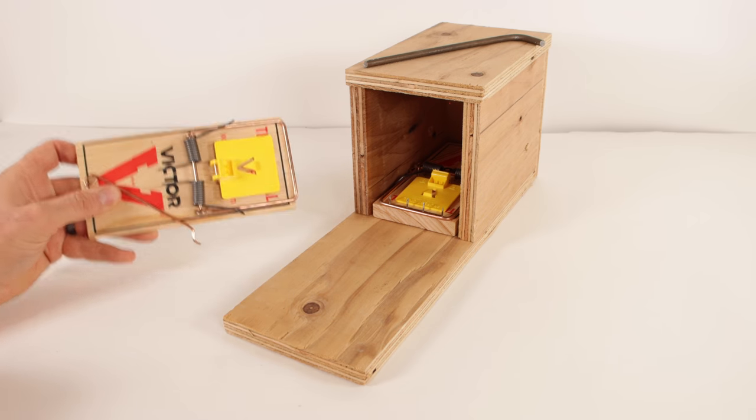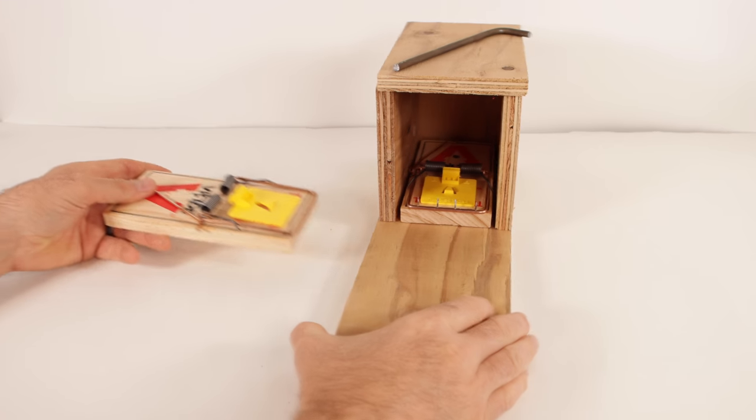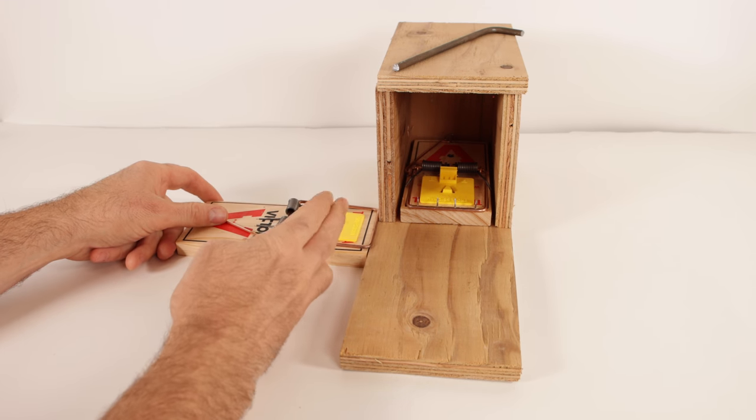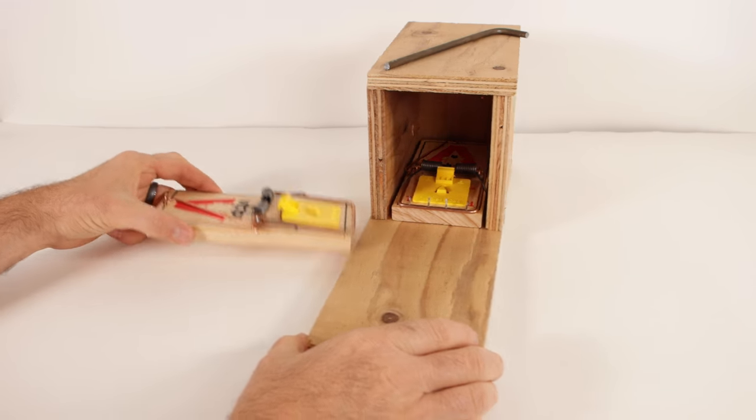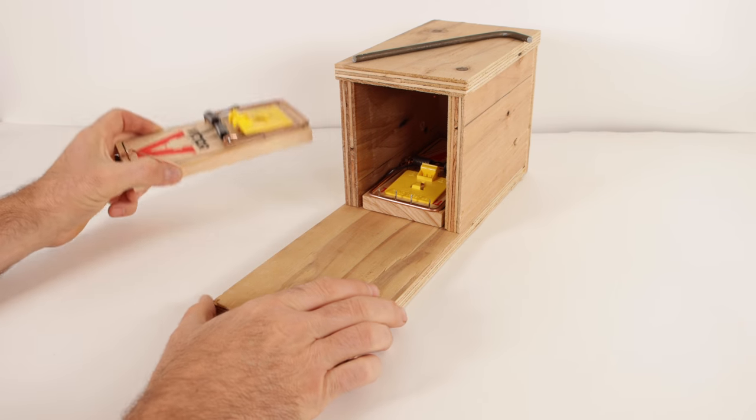Now, when set correctly, these traps can be very effective on their own. You place them along a wall so the rat travels down, hits the trigger, and gets caught. But for smart rats, I've made some modifications.